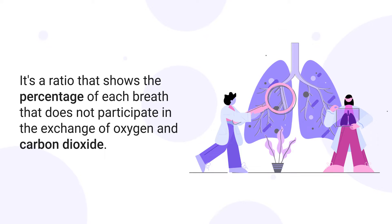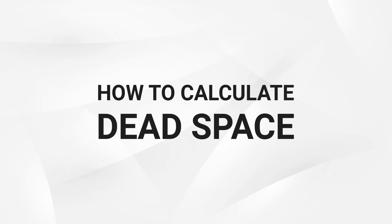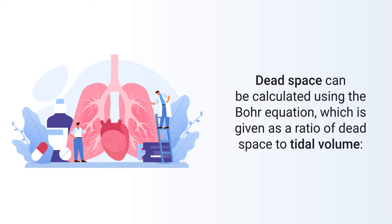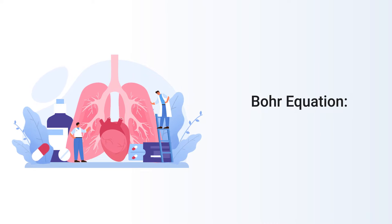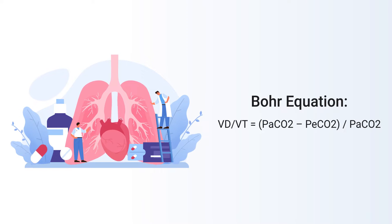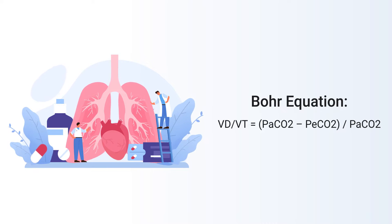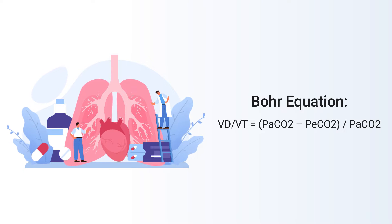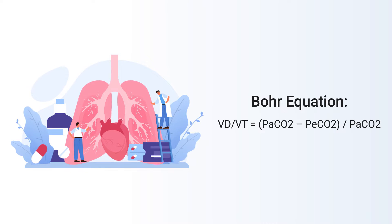In the exchange of oxygen and carbon dioxide. Now let's talk about how to calculate dead space — it can be calculated using the Bohr equation, which is given as a ratio of dead space to tidal volume. The dead space to tidal volume ratio is equal to PaCO₂ minus PeCO₂ divided by PaCO₂, where PaCO₂ stands for the partial pressure of arterial carbon dioxide and PeCO₂ represents exhaled or end-tidal carbon dioxide.